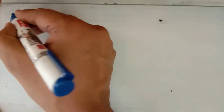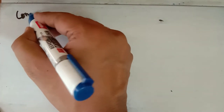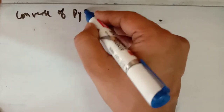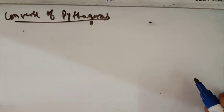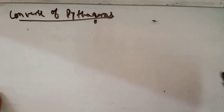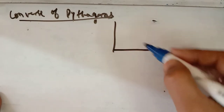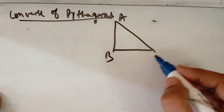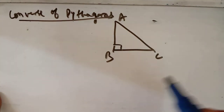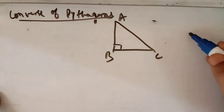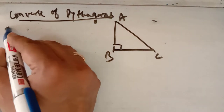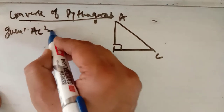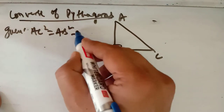Now for the converse of the Pythagoras theorem — learn the statement from the book. The converse states: if in a triangle the square of one side is equal to the sum of the squares of the remaining two sides, then the angle opposite to the first side is a right angle. In this question, AC² = AB² + BC² is given, and you have to prove angle B equals 90 degrees.